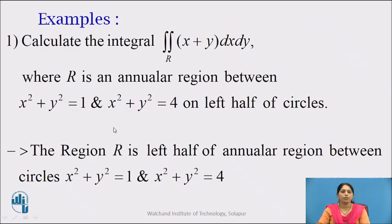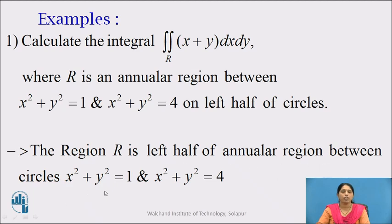Now, let us go to the examples. Calculate the integral: double integral over R of (x + y) dx dy, where R is an annular region between x² + y² = 1 and x² + y² = 4 on the left half of the circles. Here, the region R is the left half of the annular region between those two circles. As the region of integration is a circular part, we will convert the given Cartesian example to the polar one. Before that, we will draw the region of integration.